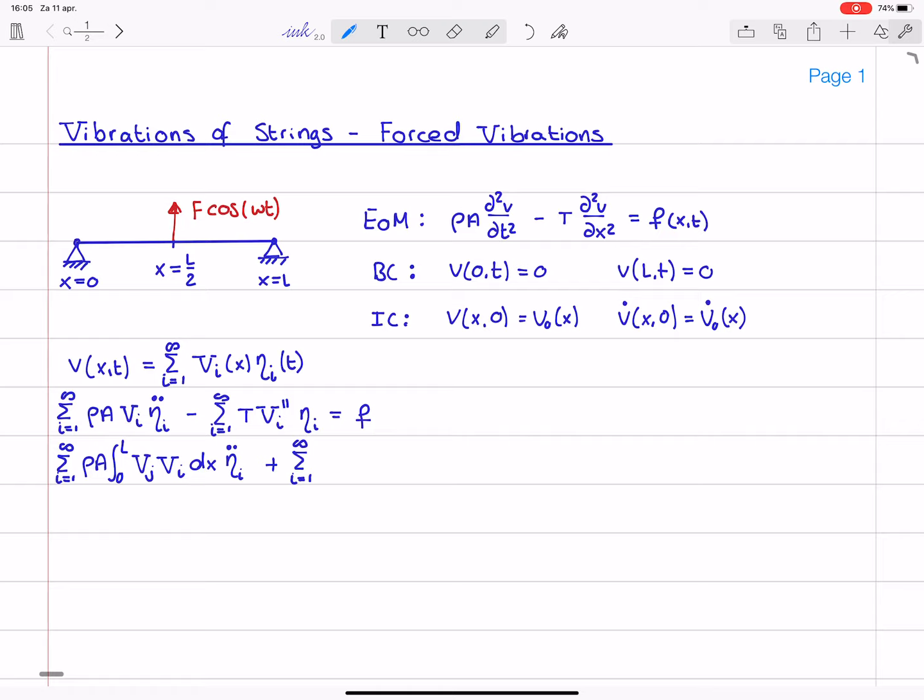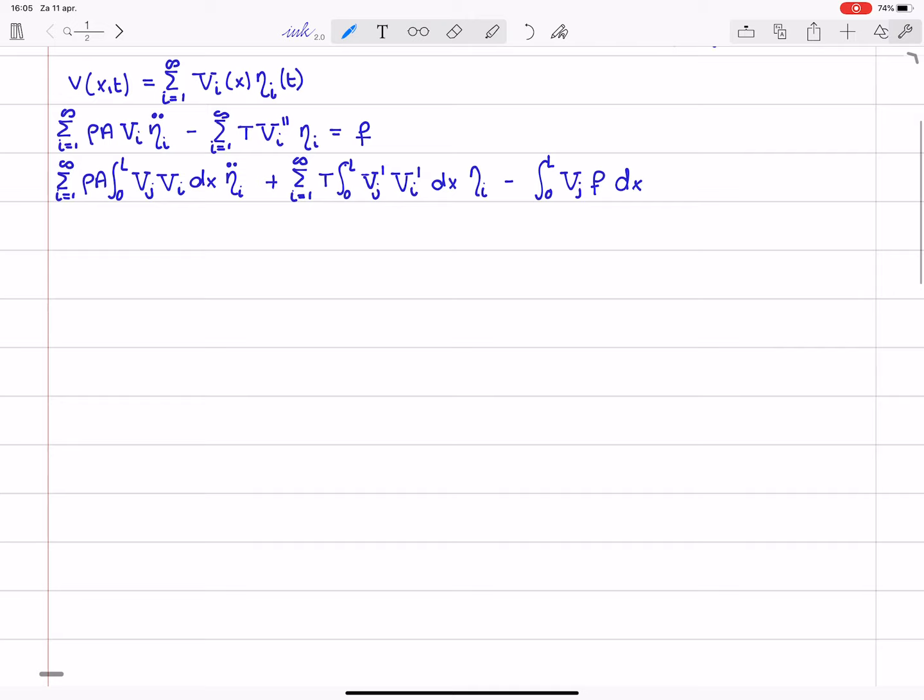And due to integration by parts, this becomes a plus, i equals 1 to infinity of T times the integral from 0 to L of vj prime vi prime dx times eta i itself. And this is now equal to the right hand side, also contains this integral, vj f dx.